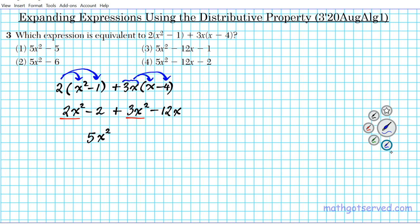Now the linear term: −12x has nothing to combine with, so we bring it down. The constant −2 also has nothing to combine with, so we bring it down. The final answer is 5x² − 12x − 2, and the answer to question number 3 is option number 4.